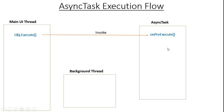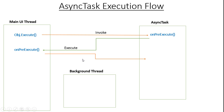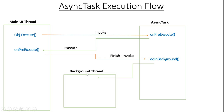The Android system places the onPreExecute method inside the UI thread and executes it there. After finishing the execution of onPreExecute, the Android system calls the doInBackground method inside AsyncTask. The Android system places the doInBackground method inside the background thread — not on the UI thread. This is the only method that executes inside the background thread.